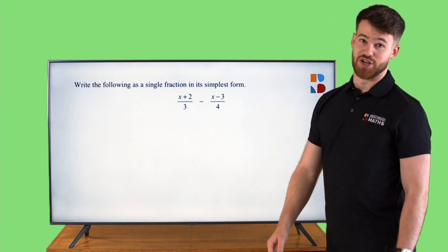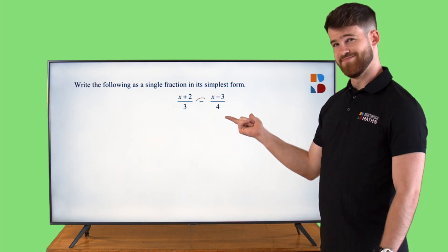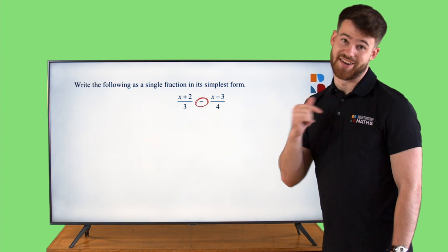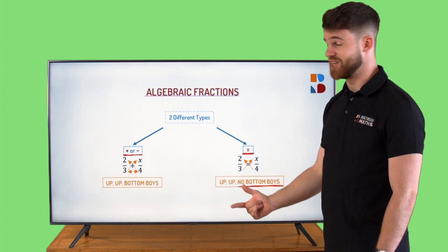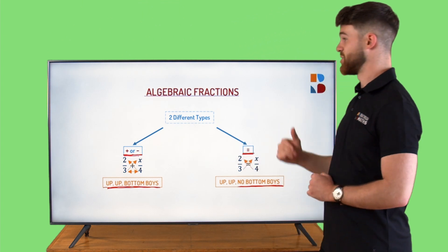Let's take a look at this question again. What do we have in the middle here? A minus. So if we go back we can see that if there's a minus in the middle we do have our up-up and our bottom boys. Don't forget that. So let's go back to the question here.